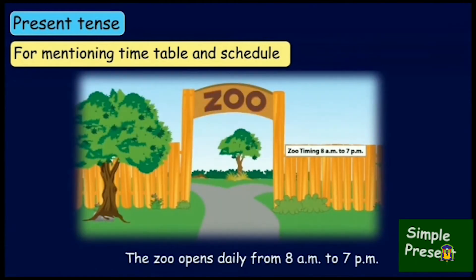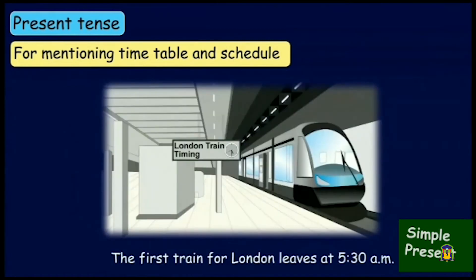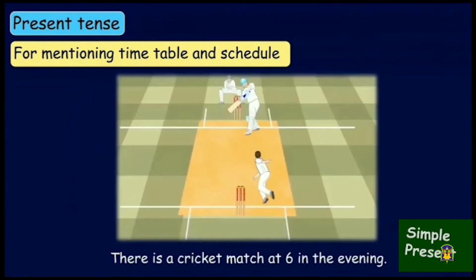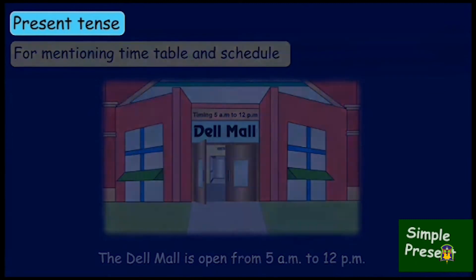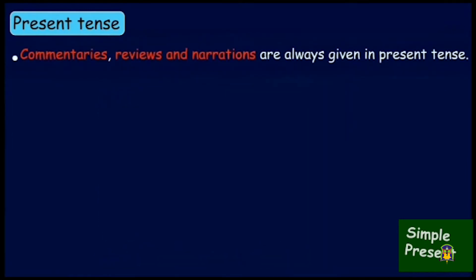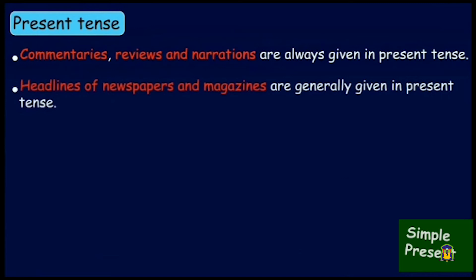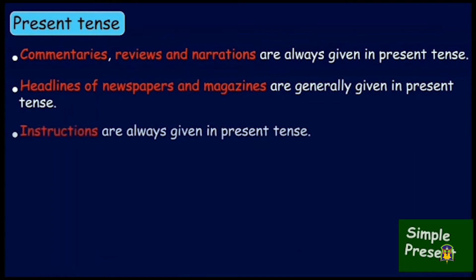'The zoo opens daily from 8 a.m. to 7 p.m.' 'The first train for London leaves at 5:30 a.m.' 'There is a cricket match at 6 in the evening.' 'The Del Mall is open from 5 a.m. to 12 p.m.' Commentaries, reviews, and narrations are always given in present tense. Headlines of newspapers and magazines are generally given in present tense. Instructions are always given in present tense.